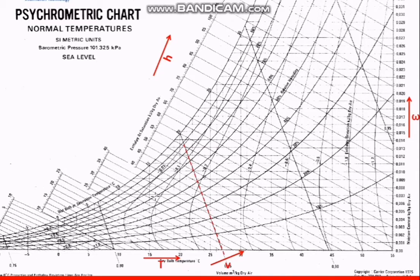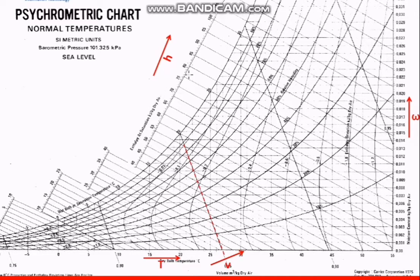Here we have the entropy at saturation, also given in kilojoules per kg dry air. If you want to find the kilojoules, you multiply by the mass of the dry air in the system.